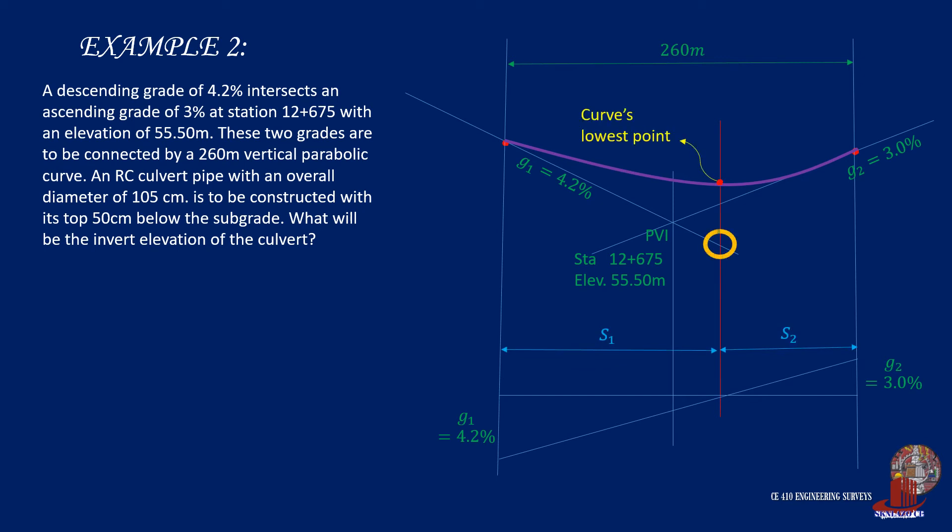Moreover, the requirement is the invert elevation of the culvert. By invert elevation, we are required to check the elevation of the bottom part of the culvert.